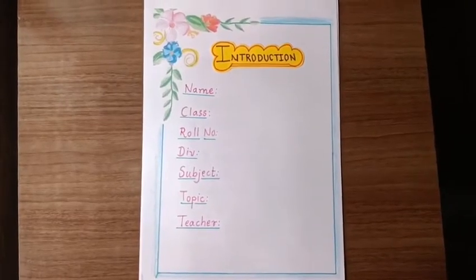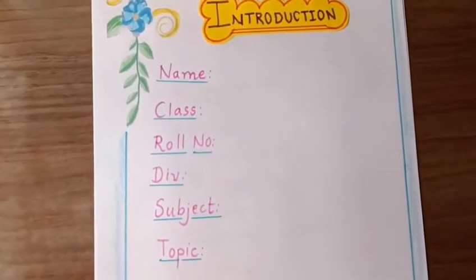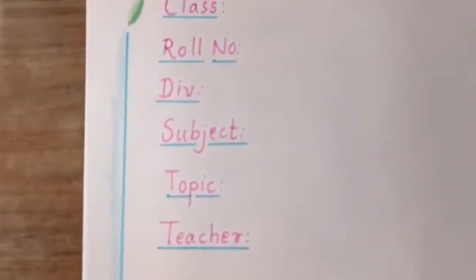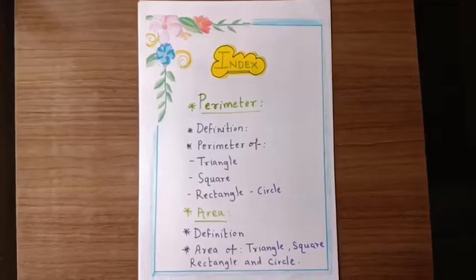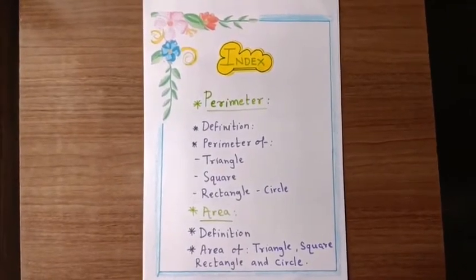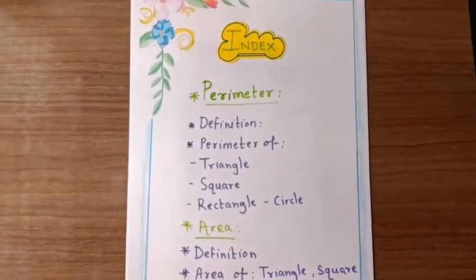The first page is introduction: name, class, roll number, division, subject, topic, and teacher. The next page is index: perimeter definition, perimeter of